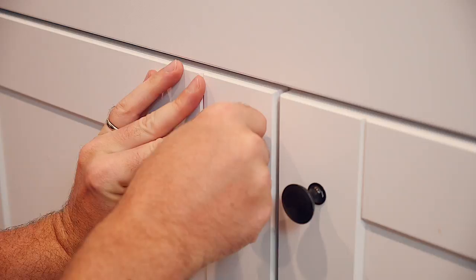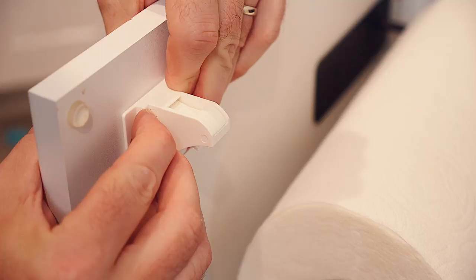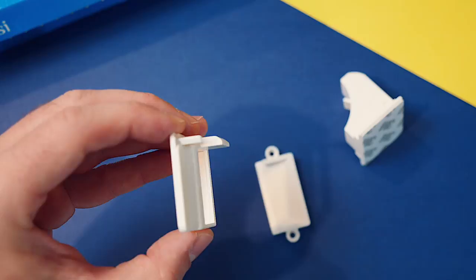When you close the cabinet door, the adhesive should take hold of the surface, allowing you to open the door with the lock attached. Press firmly on the lock for about five seconds to make sure the adhesive has made good contact.